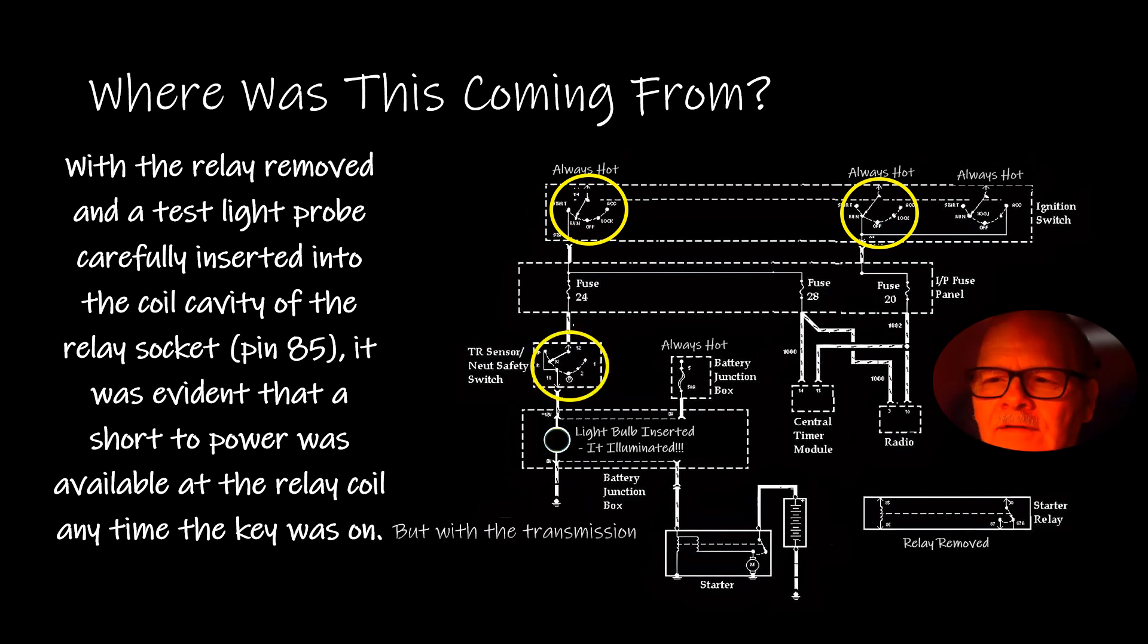If I put it in reverse or any other position besides park and neutral, the light would go out. So it was telling me the starter relay was being energized by wherever this voltage was coming from, and it was breaking the circuit whenever you put the transmission range sensor in any plane except park or neutral.